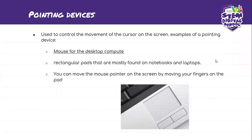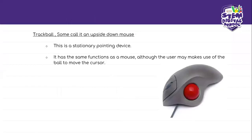We also have a trackball — some call it an upside-down mouse. This is a stationary pointing device. It has the same functions as a mouse, although the user may make use of the ball to move the cursor. You can use this red ball to move the cursor.